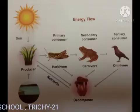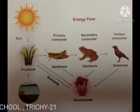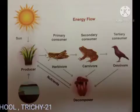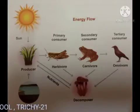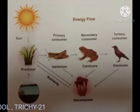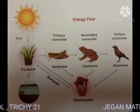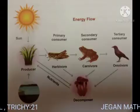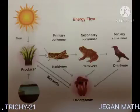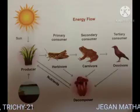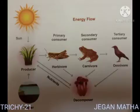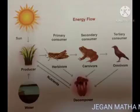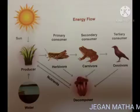The food chain begins with the energy given by the sun. Sunlight triggers photosynthesis in plants, and the energy from the sun is stored in plant parts. When the grasshopper eats the grass, energy flows from the grass to the grasshopper. A frog gets energy by eating the grasshopper, and this energy is then transferred to a crow.